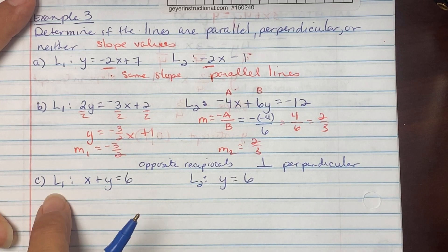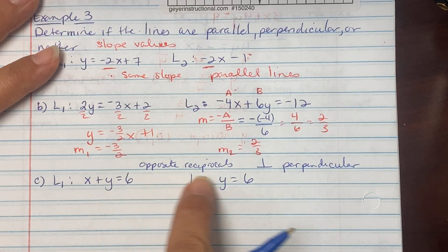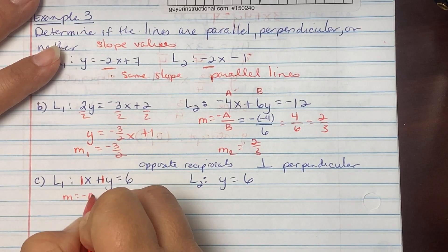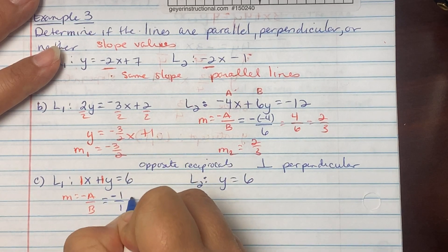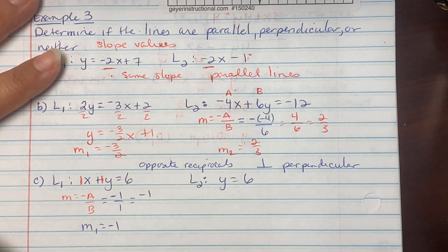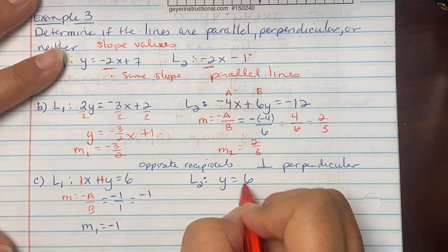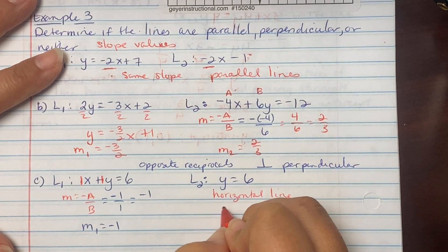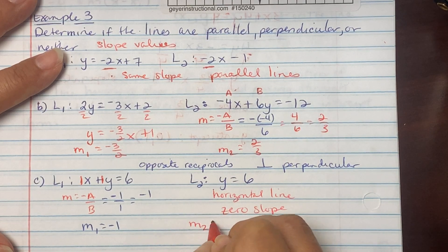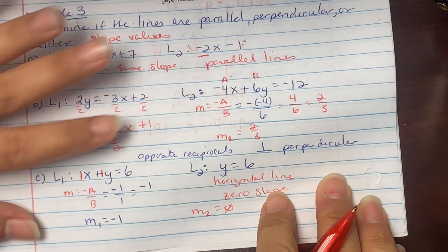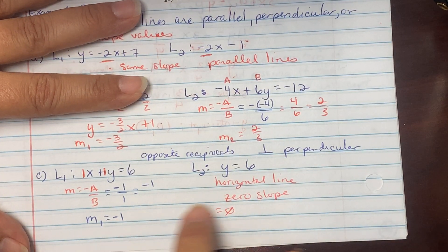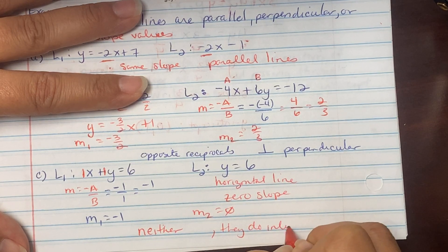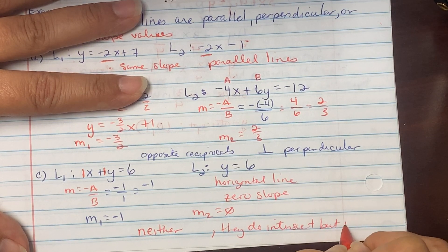Part c: Line 1 is x plus y equals 6, Line 2 is y equals 6. For Line 1 in standard form, slope equals negative A over B equals negative 1 over 1, so slope is negative one. Line 2 is horizontal, so it has a zero slope. Since the slopes are not the same and not negative reciprocals, these lines are neither parallel nor perpendicular — they do intersect, but not at 90 degrees.